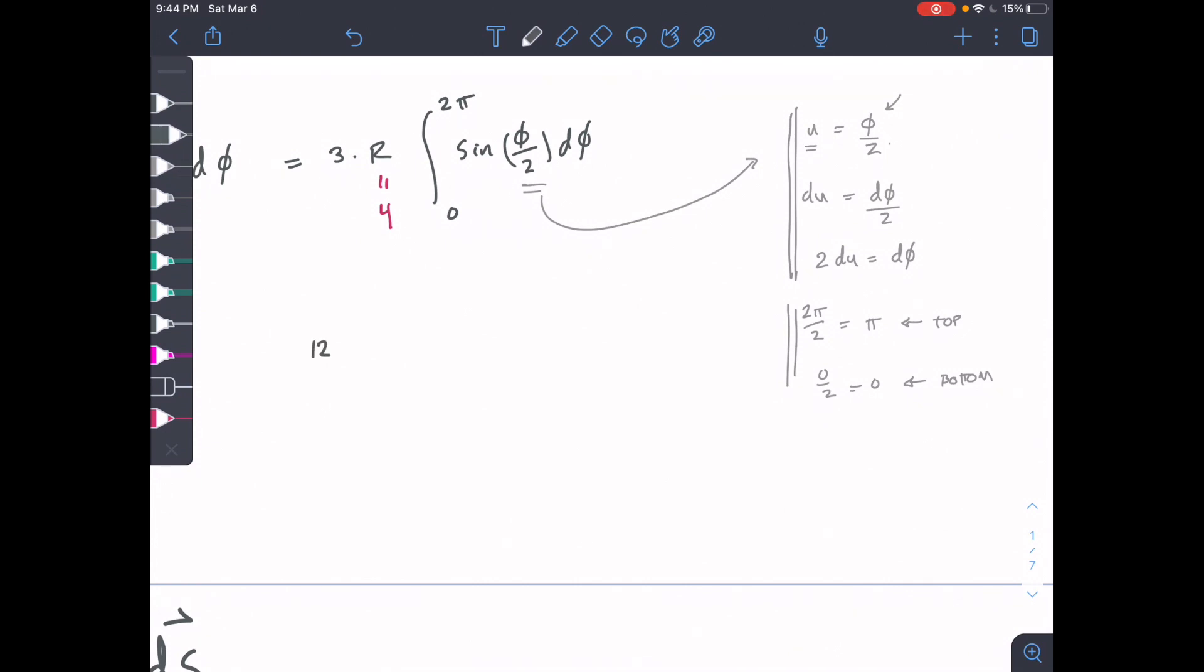We have 12 on the outside, right? 12. And then 0 to pi because we did that u change. We have a 2 here because we sub out - let's look at our pieces. We have 2 du for d phi, so we're going to sub that out. We're going to put in 2 du for d phi. And then for our sine of phi over 2, we're going to have sine of u, because we're going to sub out our u for that phi over 2.